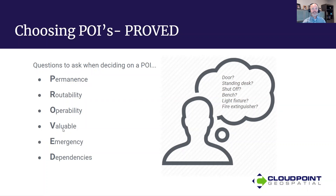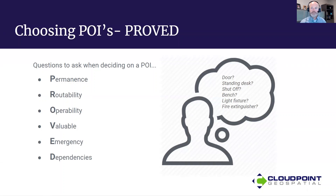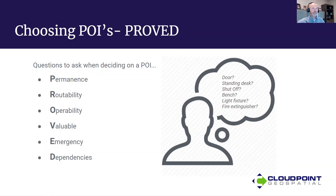D — Dependencies. What else is dependent upon that point? Is that point part of another system? For example, a light switch — the switch itself may not need to be inspected and isn't valuable on its own, but it's part of a complete system. The switch is dependent upon the system and the system is dependent upon the switch. So that's important as well.